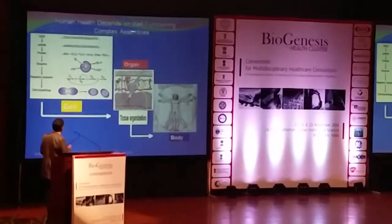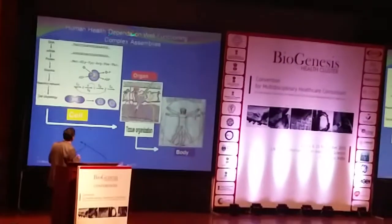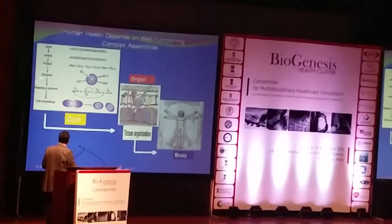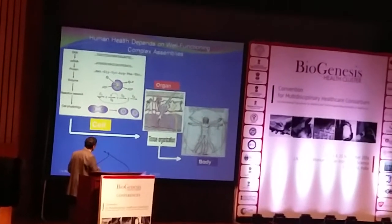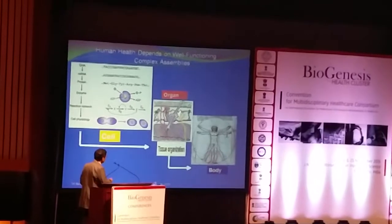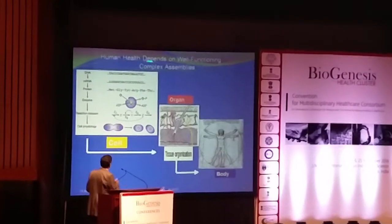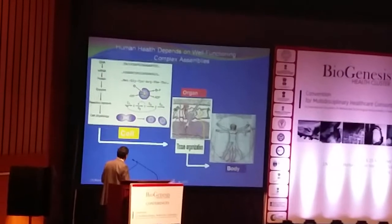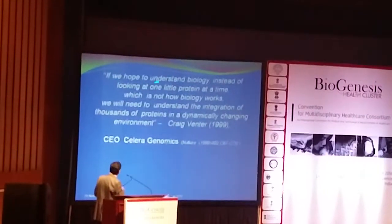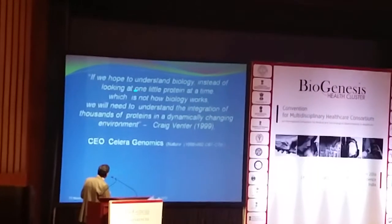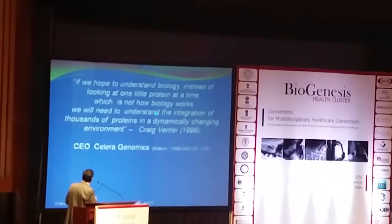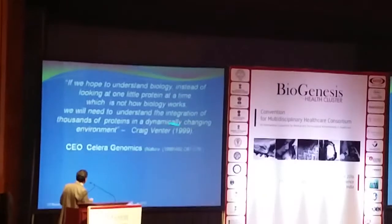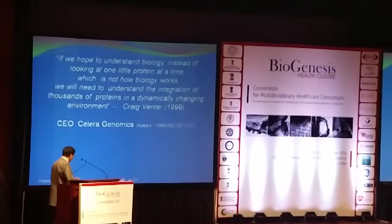Human health depends on the very good functioning of a complex assembly. Biology is very important for normal health — DNA should function normally to give mRNA, protein, and enzyme. There is a reactive network. If all cells are working well in a particular organ, the organ will function well. When all organs are functioning well, the body will function. If we hope to understand biology instead of looking at one protein at a time, we will need to understand the integration of thousands of proteins in a dynamically changing environment.